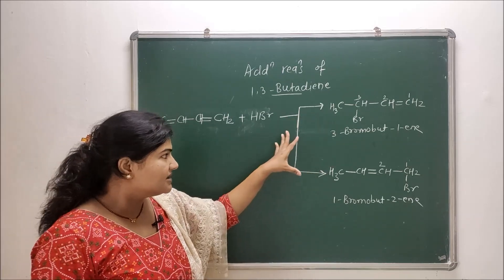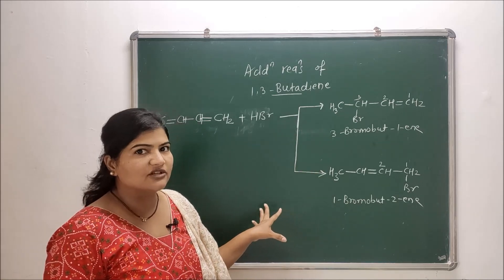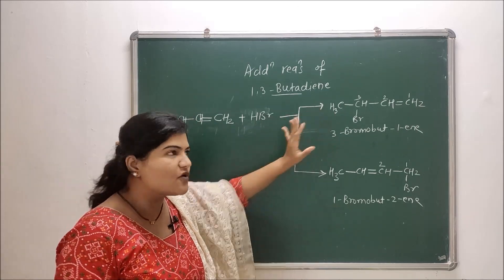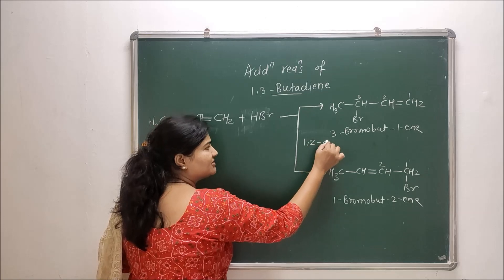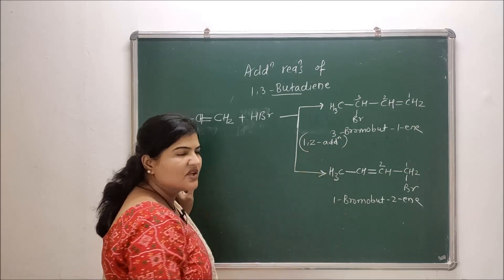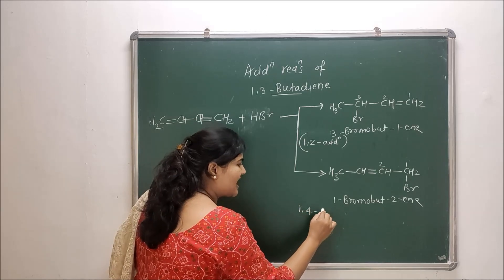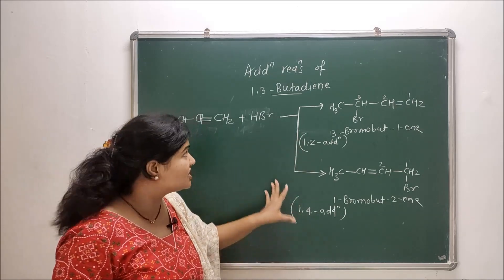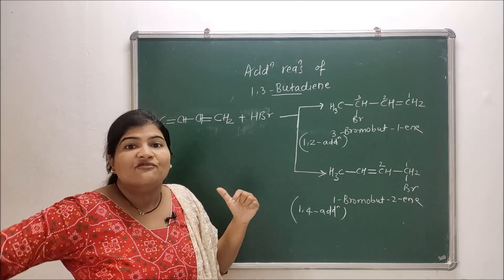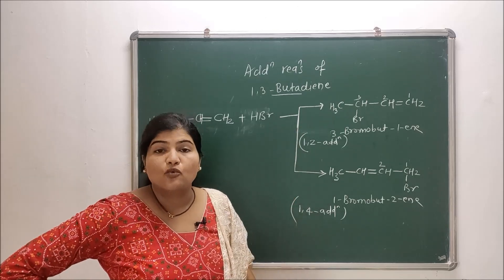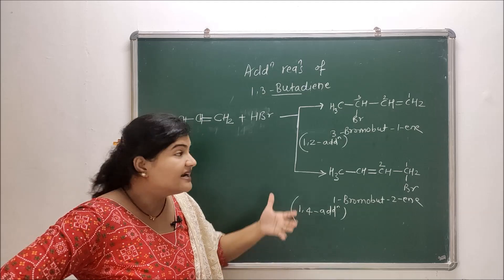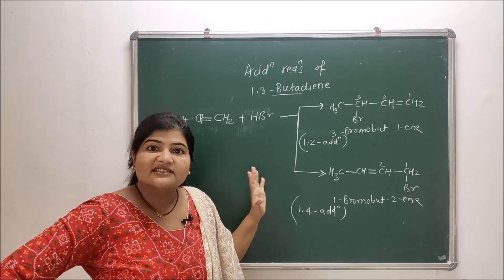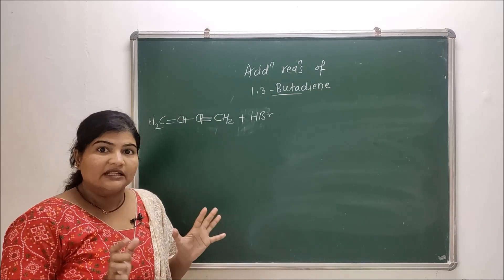The two products are different from each other, formed by different methods. The first product, 3-bromo-1-butene, is formed by 1,2-addition, and the second, 1-bromo-2-butene, is formed by 1,4-addition. We'll discuss what these terms mean, what mechanism leads to each product, and what reaction conditions decide the ratio of the two products.